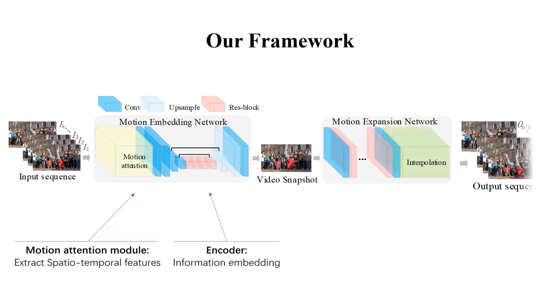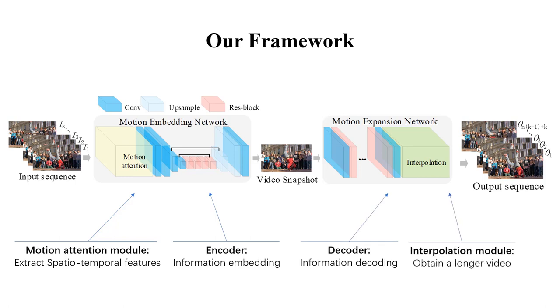The motion expansion network restored the video snapshot back to a video by the decoder. Additional interpolation network makes the video longer and smoother.